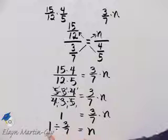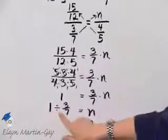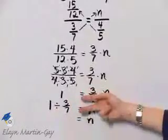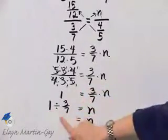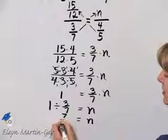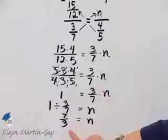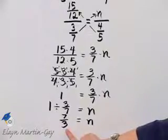That means n is 1 divided by 3 sevenths. Let's do this mentally. This will be 1 times 7 thirds. And what is 1 times 7 thirds? 1 times 7 thirds is simply 7 thirds. So my value for the unknown is 7 thirds.